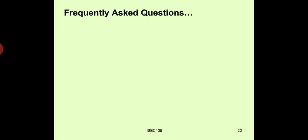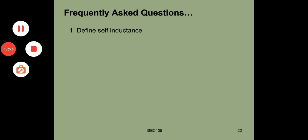Now let us look at some frequently asked questions from the examination point of view. Define self-inductance — this has appeared many times in board examinations. You may also be asked to write the expression for inductance: L = μ₀ × μR × A × N² / l. Well, thank you very much. Let us conclude here for this session.